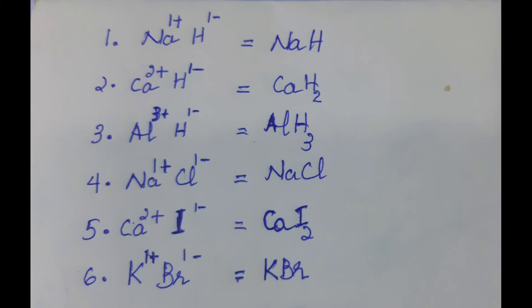Number 4, sodium chloride — sodium is Na 1 plus, chloride is Cl 1 minus, formula is NaCl. Number 5, calcium iodide — Ca 2 plus, iodide is I 1 minus, formula is CaI2. Number 6, potassium bromide — potassium is K 1 plus, bromide is Br 1 minus, formula is KBr.